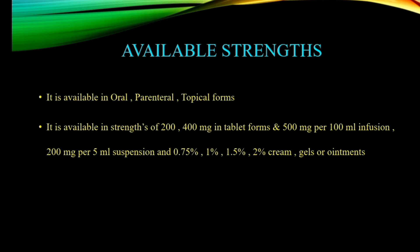The available strengths of metronidazole are: in oral tablet forms — 200 mg and 400 mg. In infusions — 500 mg per 100 ml. In oral suspensions — 200 mg per 5 ml. In creams, gels, and ointments — strengths of 0.75%, 1%, 1.5%, and 2% weight by weight, which is the proportion used for semi-solid dosage forms.